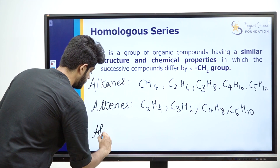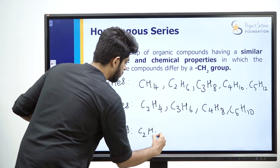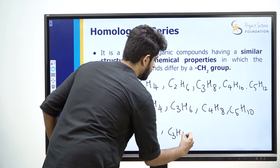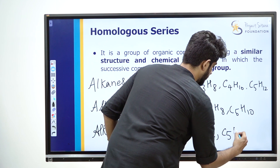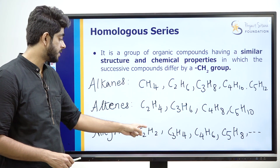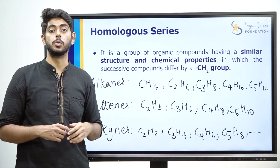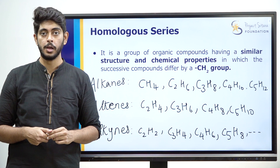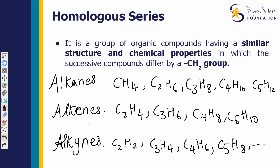Next, alkynes. The alkynes series: C2H2, C3H4, C4H6, C5H8. You can keep adding members to alkynes. Observe the difference — it's CH2, CH2 between each member. From C2 to C3, hydrogen goes from H2 to H4 — that's CH2 difference. By adding CH2, you get the next member of the homologous series. Properties of all compounds in a homologous series are similar.